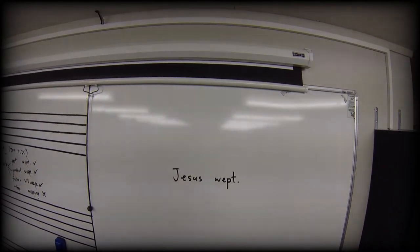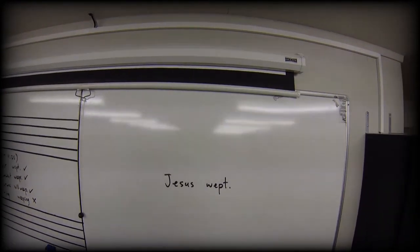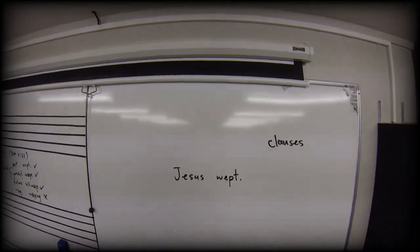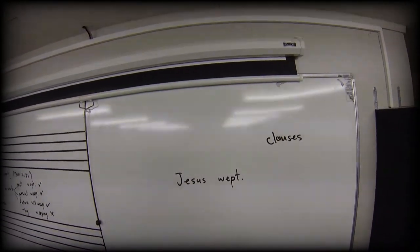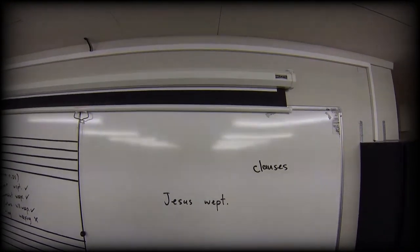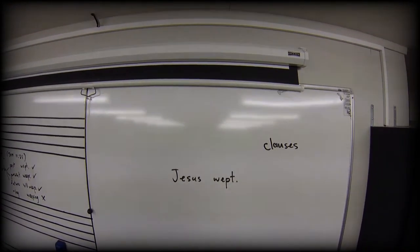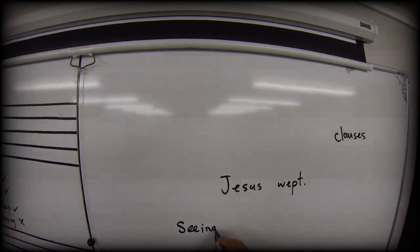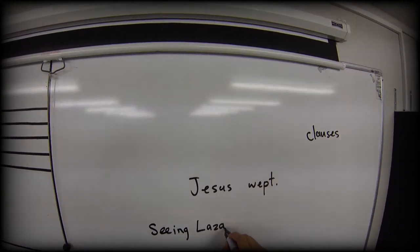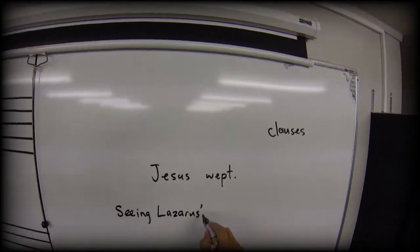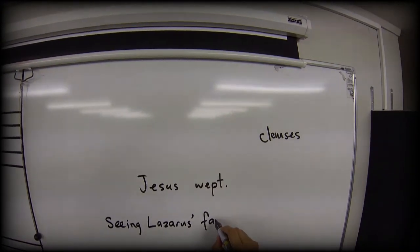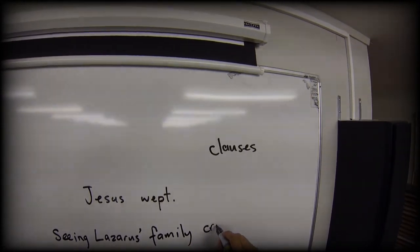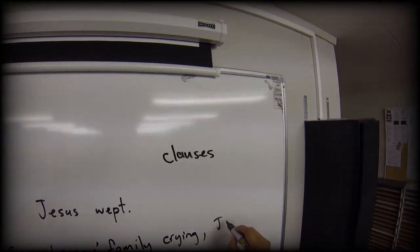We very often add what we call clauses to make our sentences more interesting. They also complicate the sentence, so we need to make sure we don't overuse clauses too. But let's put a pretty standard clause in here: 'Seeing Lazarus' family crying, Jesus wept.' There's a possessive apostrophe that goes after the S — we'll look at that in another video.